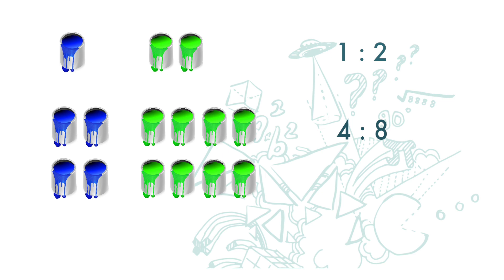One tin of blue paint to two tins of green paint, and four tins of blue paint to eight tins of green paint. These two ratios are said to be proportional. Note that they are also equivalent ratios.